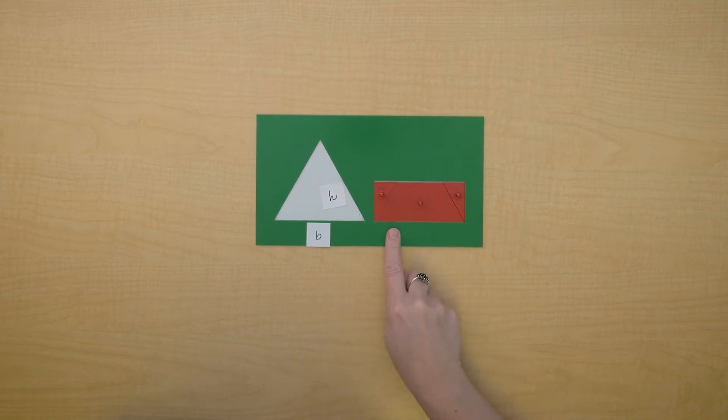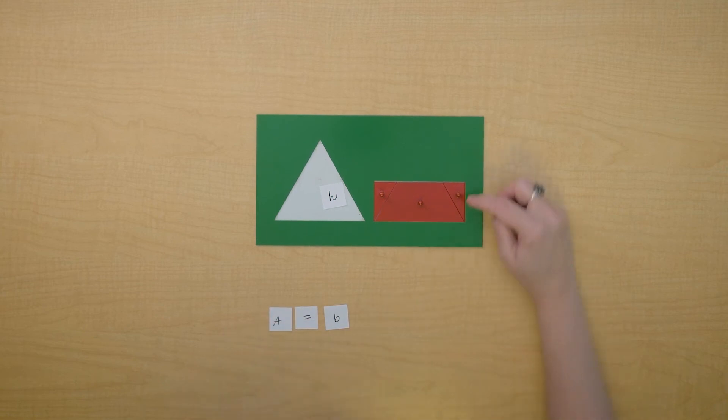So we have our base and our height of the rectangle. The base of this rectangle is the same as the base of the triangle. So when we want to find the area, we know we could multiply the base times the height of this rectangle.